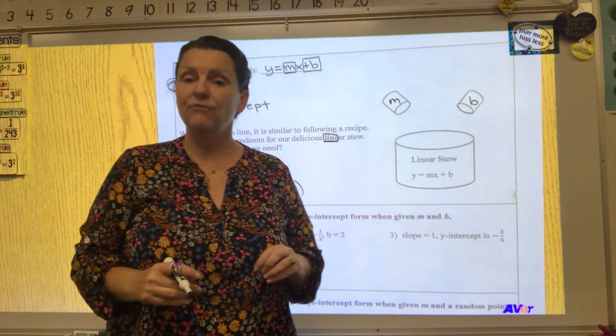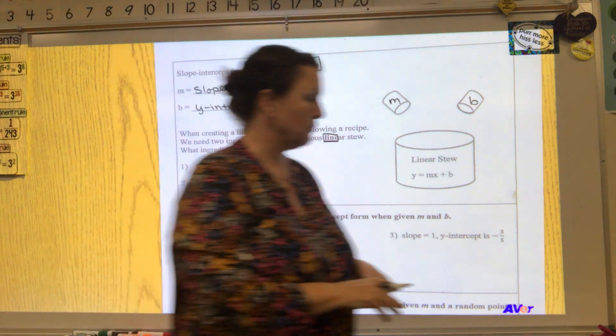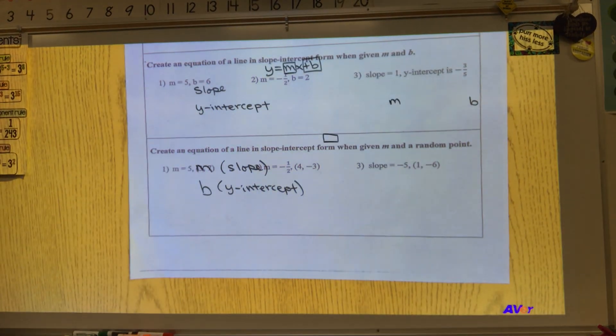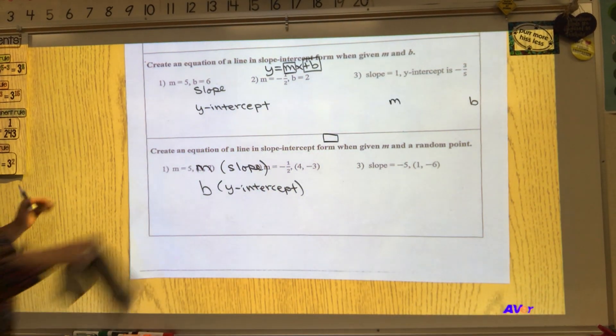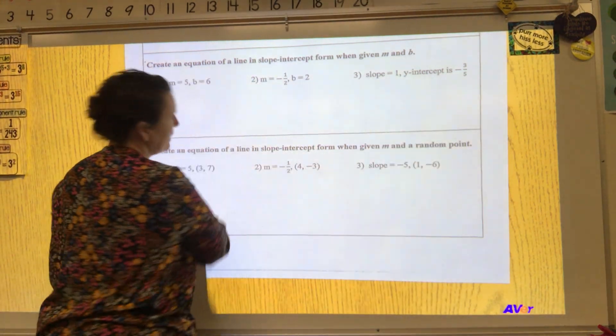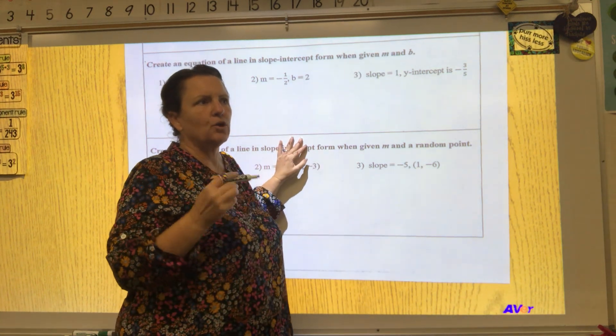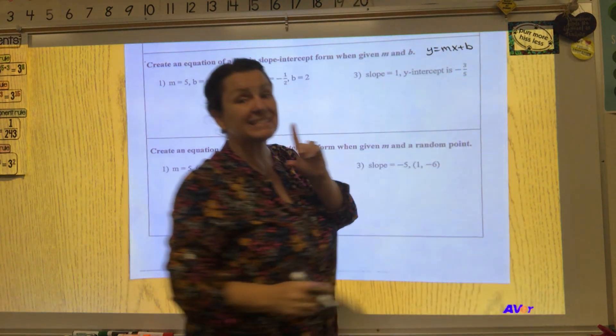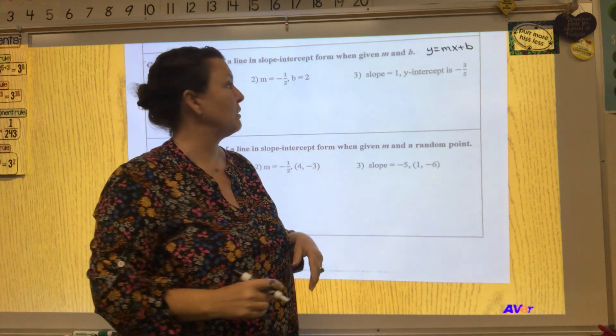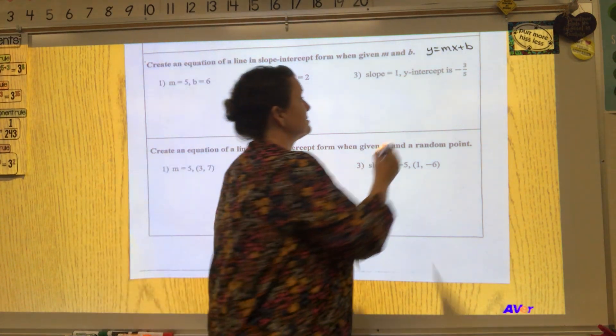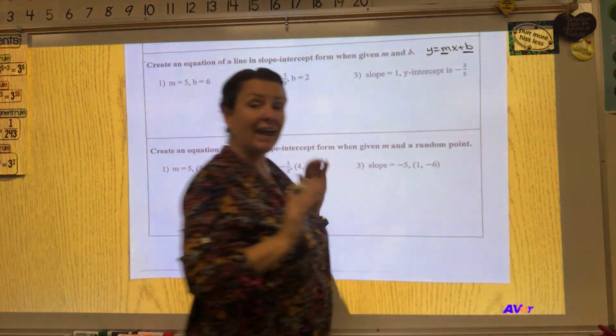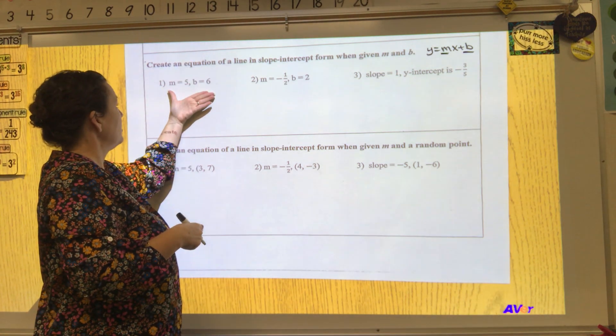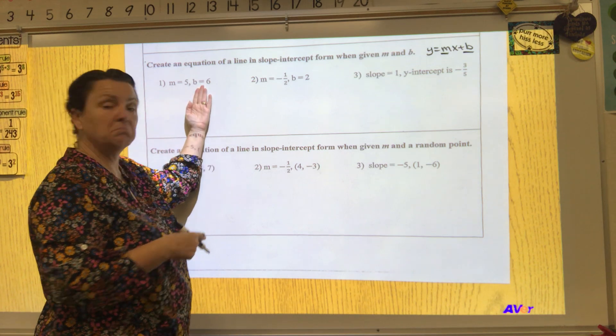Let's keep practicing. It says create an equation of a line in slope-intercept form when given m and b. Well, think about this. I want to create a line - this is the basic recipe for a line. It is not the only recipe for a line, but it is our basic formula, and this one needs two ingredients: m and b. If I have those two ingredients, I can make my line.